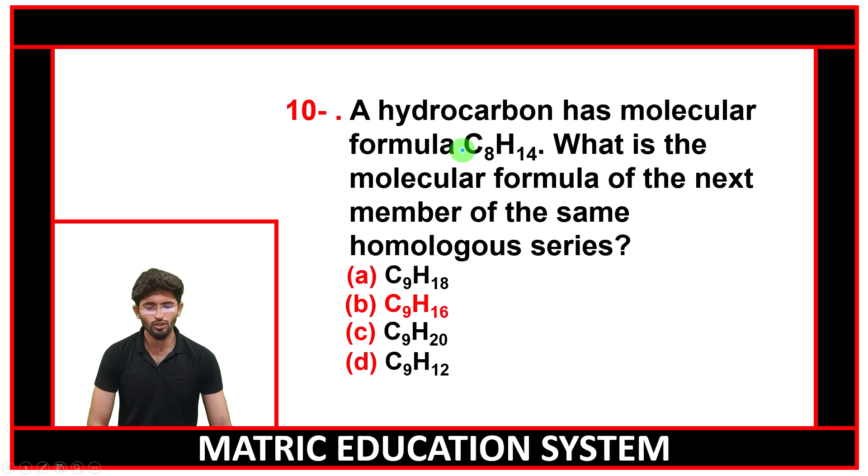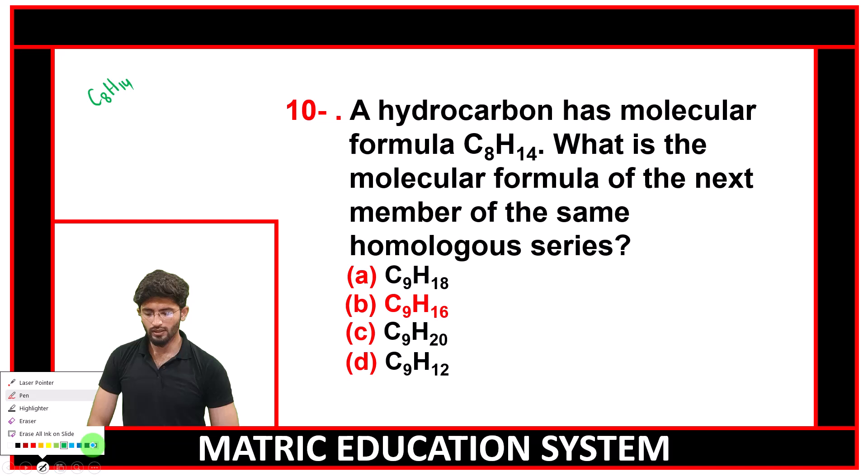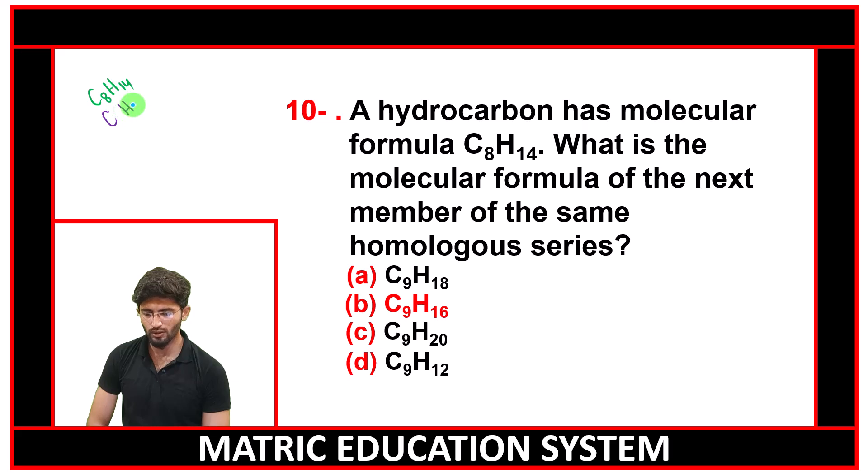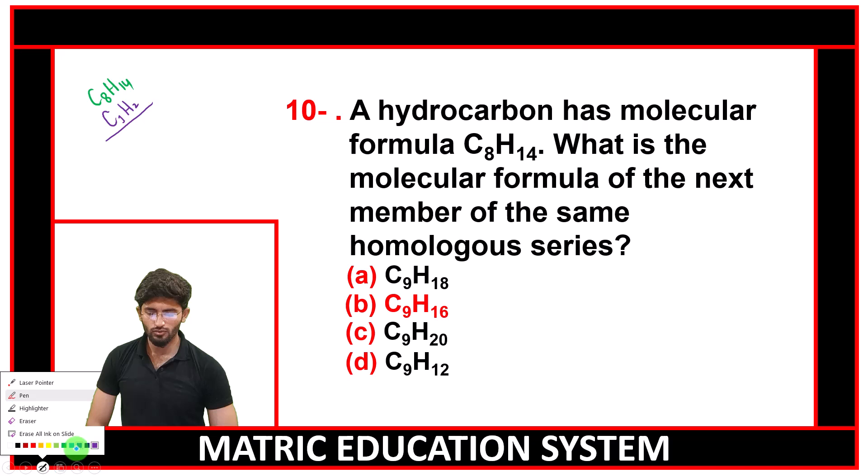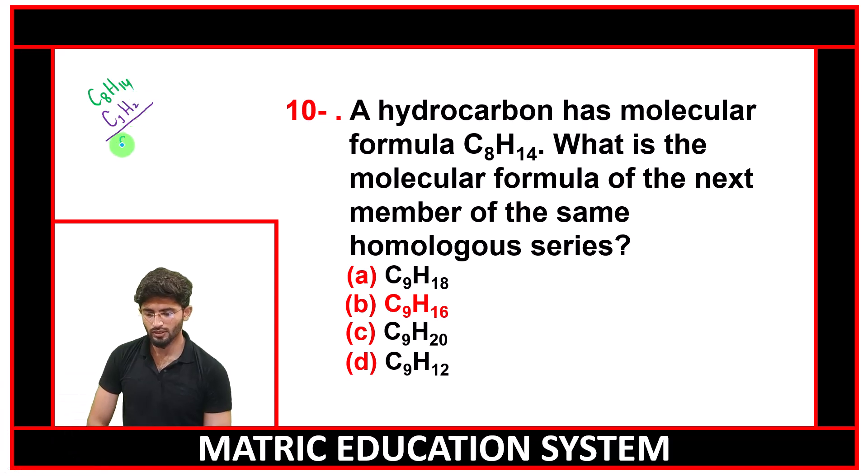A hydrocarbon has molecular formula C8H14. What is the next molecular formula? This is a very simple trick. You can see that C8H14, so C9H16 is the correct option.